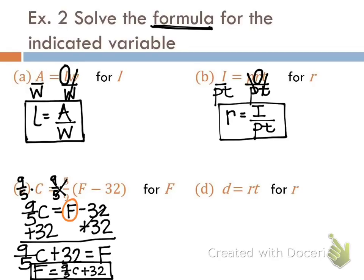And lastly we have the distance formula: distance equals rate times time. They want us to solve for R. R and T are multiplying, so the inverse operation is to divide both sides by T. T over T equals 1, so R equals distance divided by time.